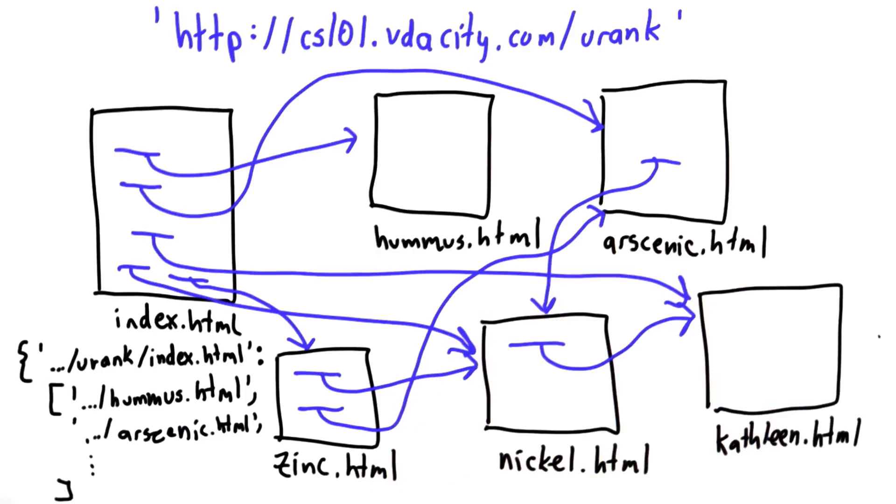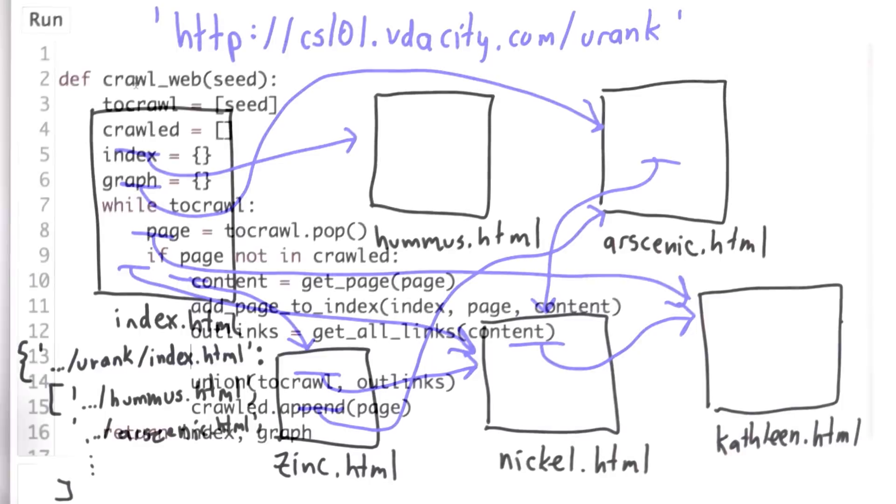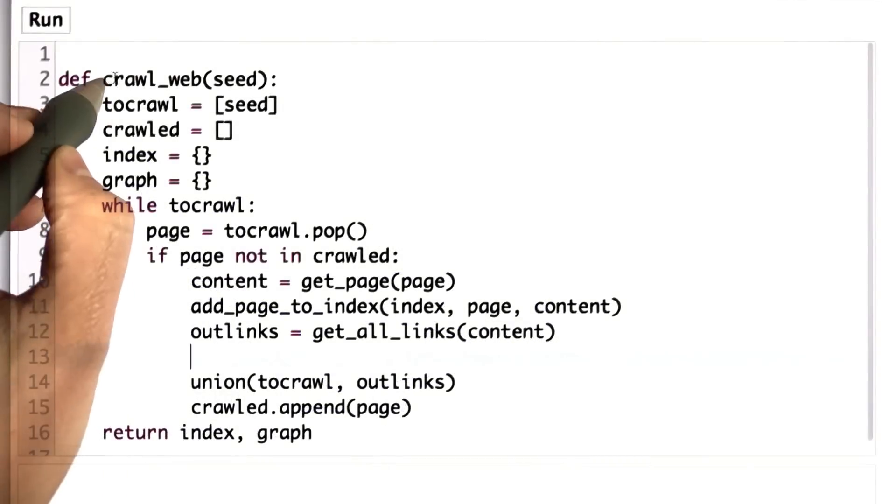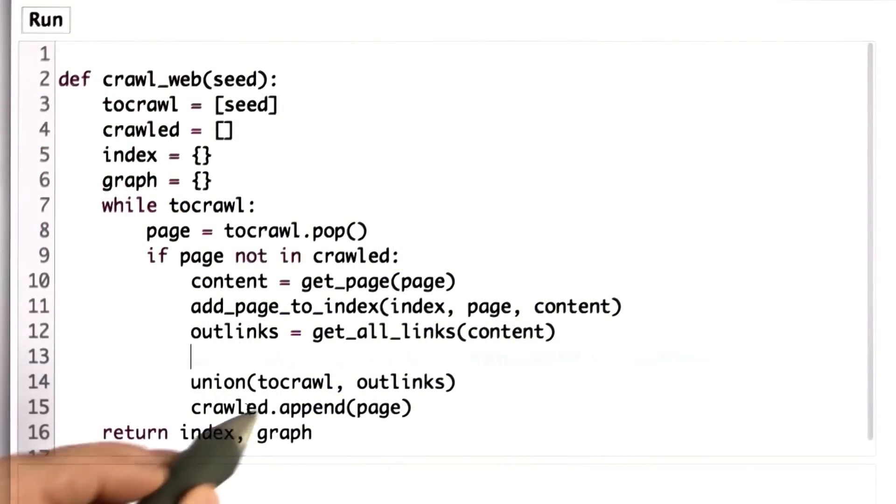The kathleen.html page doesn't have any outgoing links. So the entry for kathleen.html should be an empty list. So see if you can figure out how to change the code for crawlweb to produce as its second output a graph that shows the structure of the web pages that we crawled.